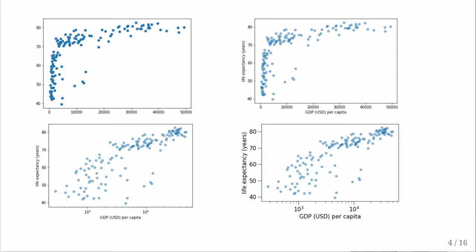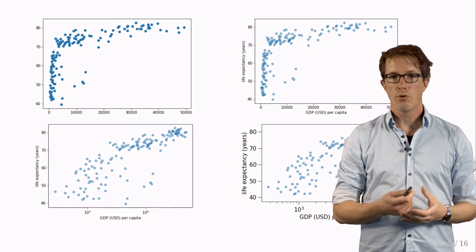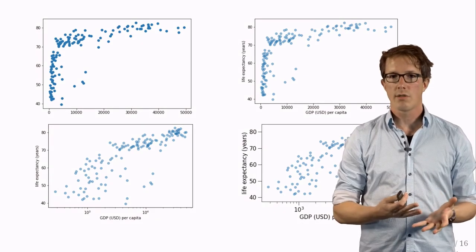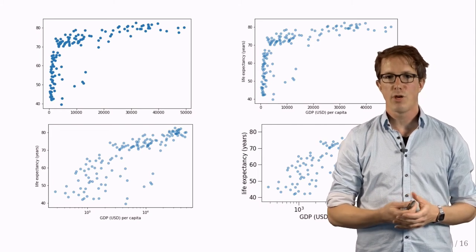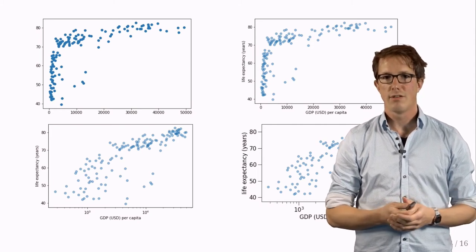Then switch to a log axis bottom left, then increase the font size and arrive at an okay looking plot, where we could add a smoothing line to emphasize the trend that countries with higher gross domestic product tend to have higher life expectation.